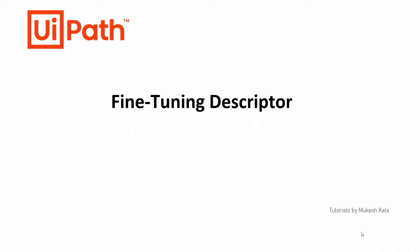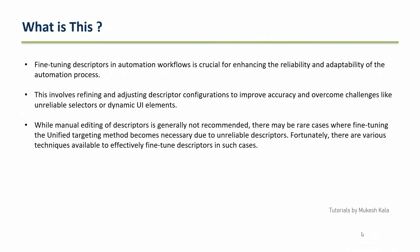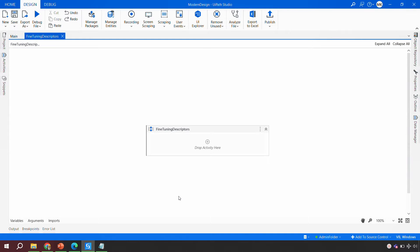Before jumping into fine-tuning descriptors, we need to understand why it is required. A descriptor is a combination of the target and the anchor, which UiPath modern design automatically generates. However, sometimes the generated descriptor is not able to identify the element on screen. There are multiple ways to fine-tune descriptors: using variables, wildcards, and additional activities.